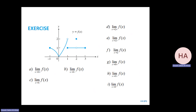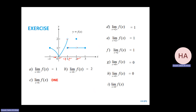More examples: limit as x → 1 from the right is 1; from the left is 2. They are not the same, so the limit does not exist. For x → 2 from the right it's 1; from the left it's also 1, so the limit is 2. For x → 0: going from either side it approaches 0, so the limit is 0.